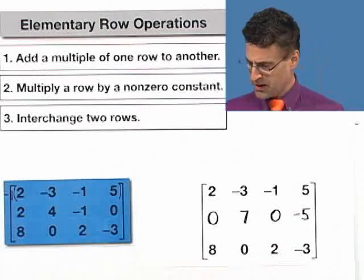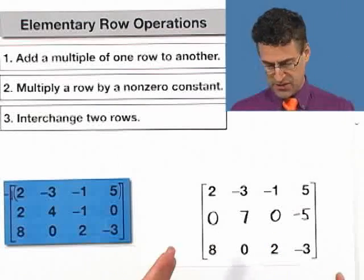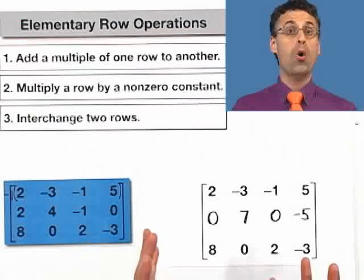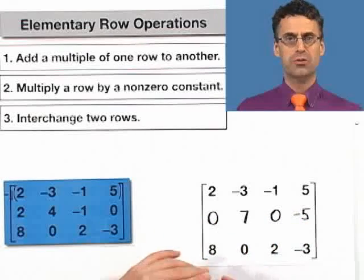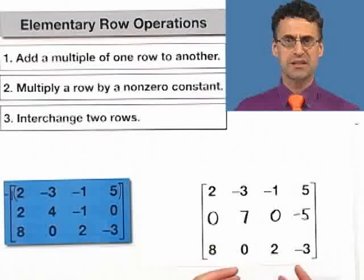So these operations, these elementary row operations, allow us to take one matrix and transform it into a different matrix. And the goal is going to be to transform it into a more simple matrix and simpler and simpler matrices until the matrices get so simple that we can actually look at the matrix and then extract some kind of information. So that's why these elementary row operations are so important and so great. Enjoy thinking about the elementary row operations in your life, and I'll see you soon.